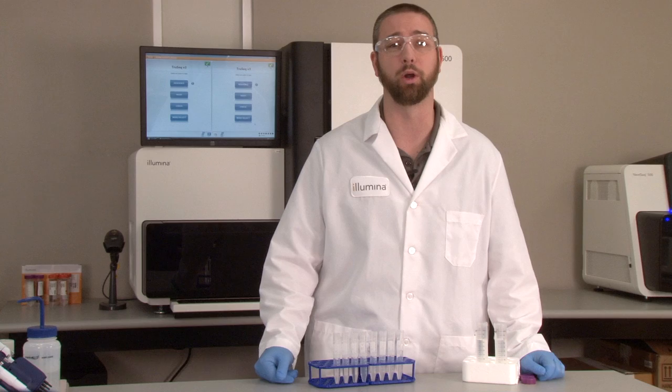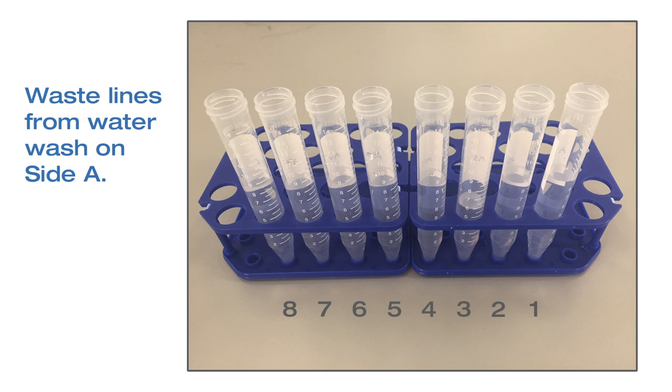To illustrate this point, on the right are eight tubes that captured the waste from a water wash on side A. One tube, which was collecting waste from lane number three, is significantly lower than the other seven tubes, and would clearly indicate poor flow.